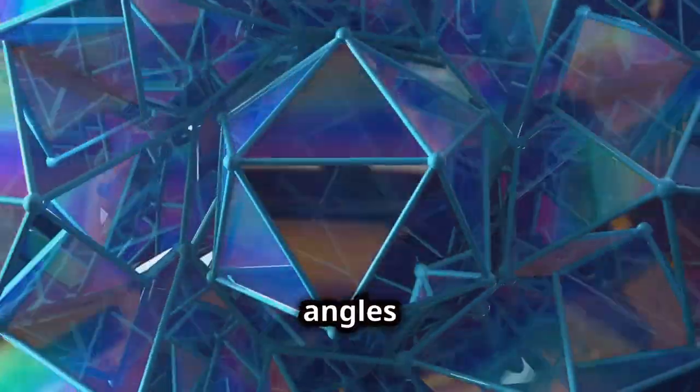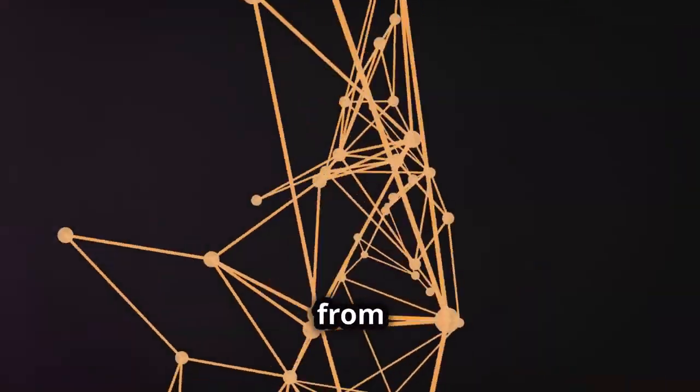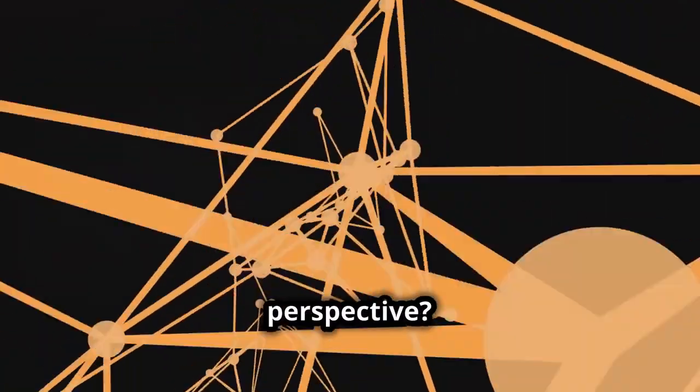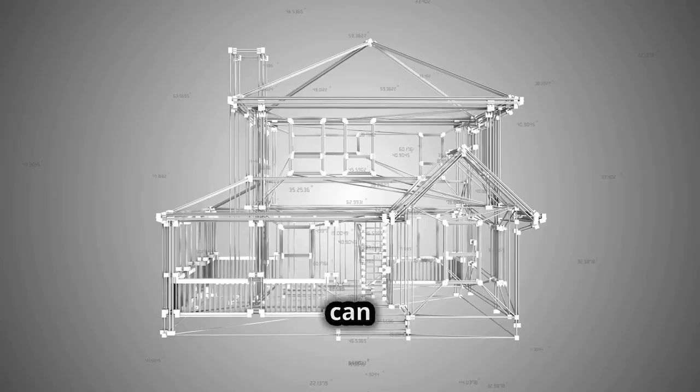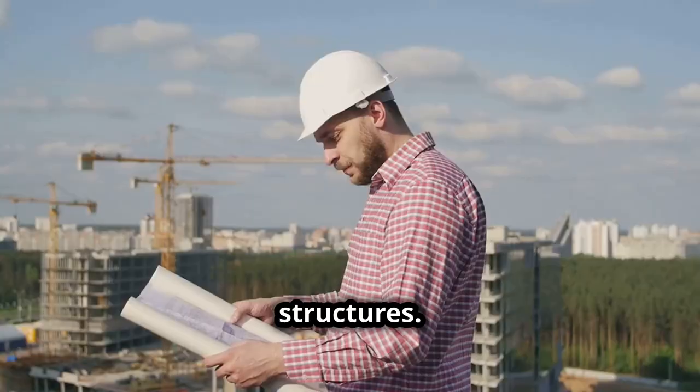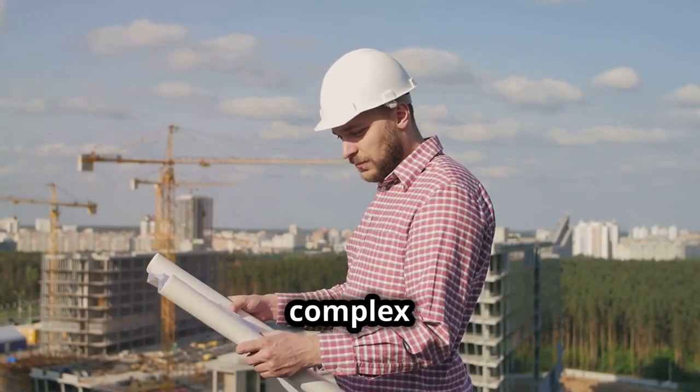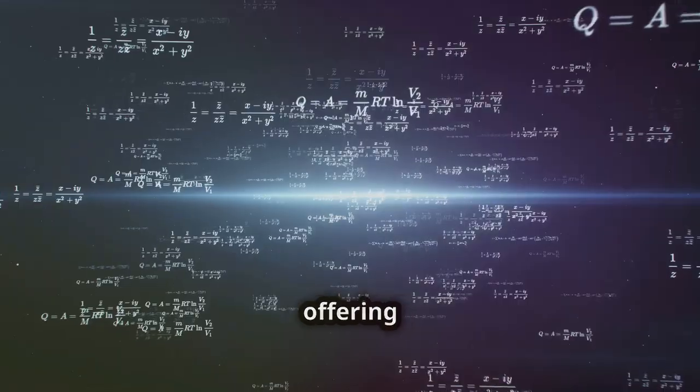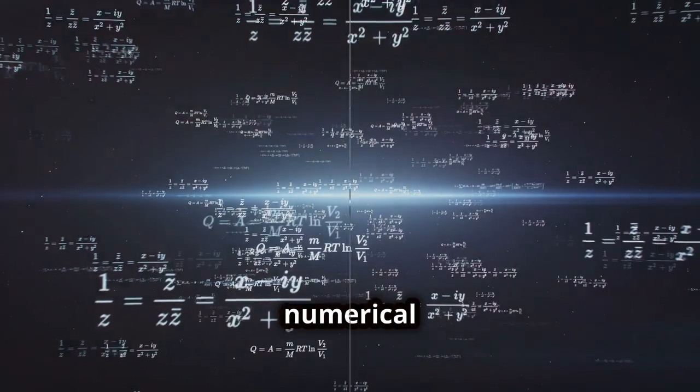Traditional geometry defines angles based on a 360-degree circle, but what if we reconsidered this from a nonary perspective? By defining angles in sets of 40 degrees—a nonary approach—we can simplify calculations and design more efficient structures. This shift could transform everything from basic architectural design to complex engineering projects, offering new ways to conceptualize space and structure in harmony with our numerical systems.